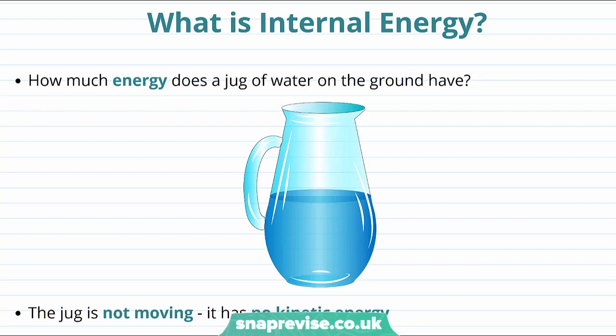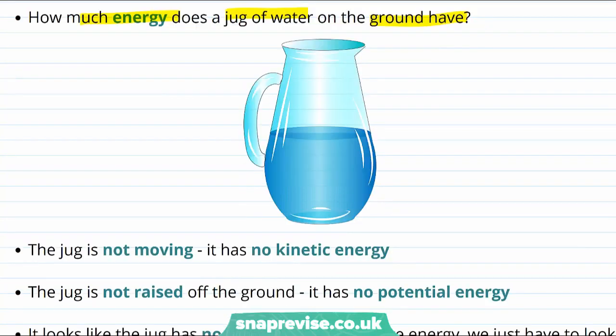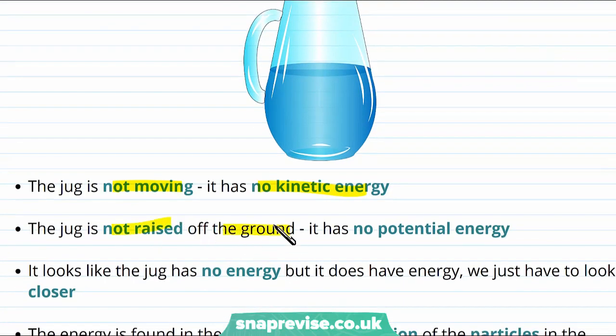So for example, how much energy does a jug of water on the ground have? Now initially, this might seem like kind of a silly question. The jug is not moving, so it has no kinetic energy. And it's not raised off the ground, so it has no potential energy.